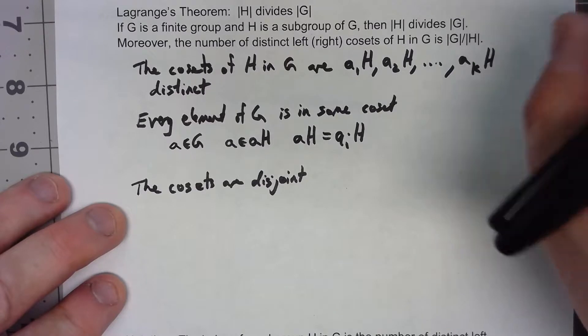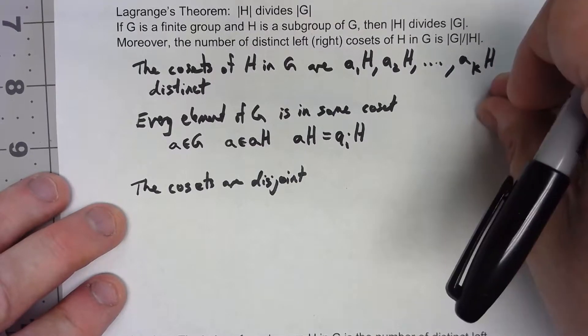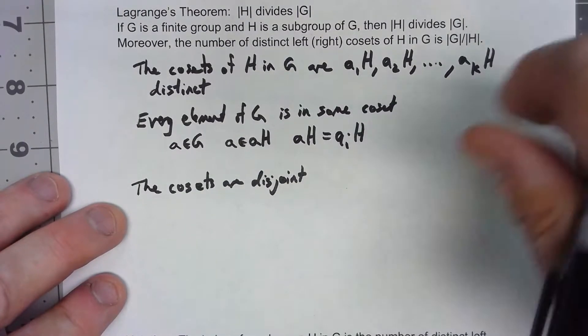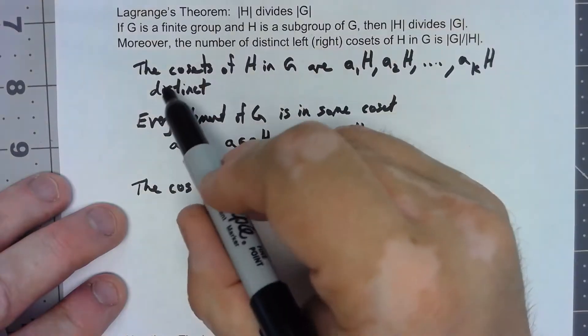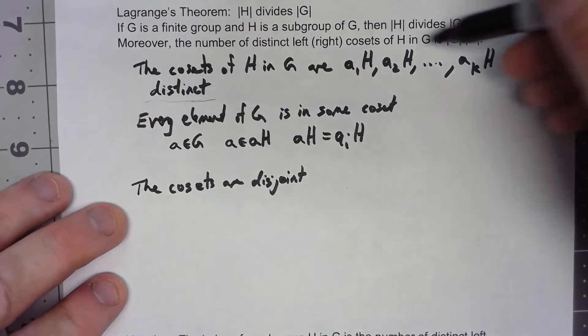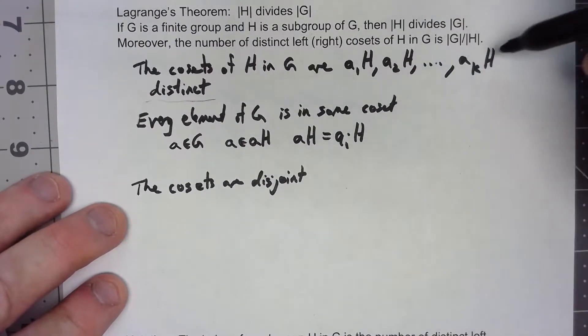We showed that either two cosets were exactly the same coset or that they were completely disjoint, there was no elements in common. Since we take these things to be distinct cosets, that must mean that these things are all disjoint, that no elements are shared between these cosets.